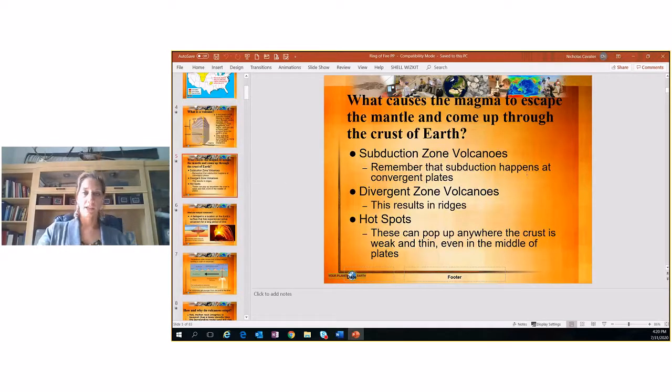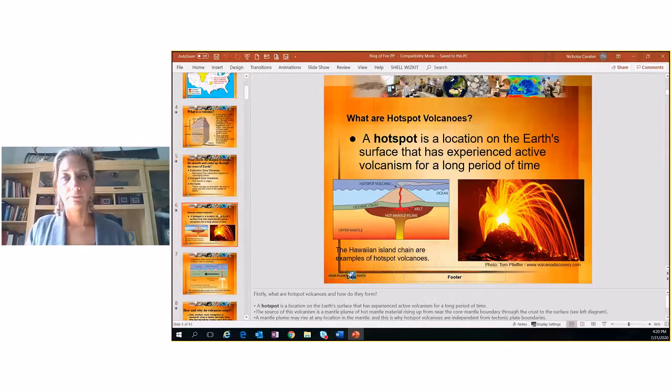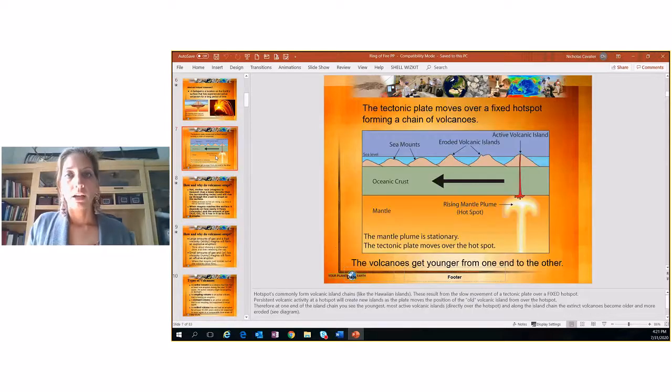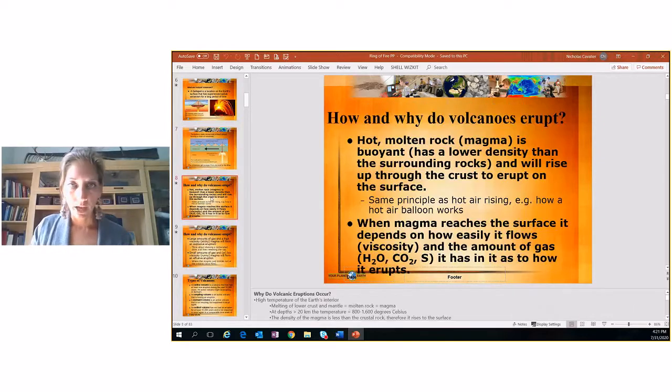What causes this magma to escape the mantle and come out? Subduction zone volcanoes, and this is all review, so I'll just kind of go through it quickly. Divergent zone volcanoes and hotspots. Hotspot location, lots of volcano activity for a long period of time. You see the Hawaiian island chains have hotspots. It's pointing right here to the top where the hotspot is. And here's a volcano erupting over here. Tectonic plate moves over the hotspots, and it forms new volcanoes. So looking at the diagram, you can see how it's pretty easy for them to just start forming. Forms a chain of them.